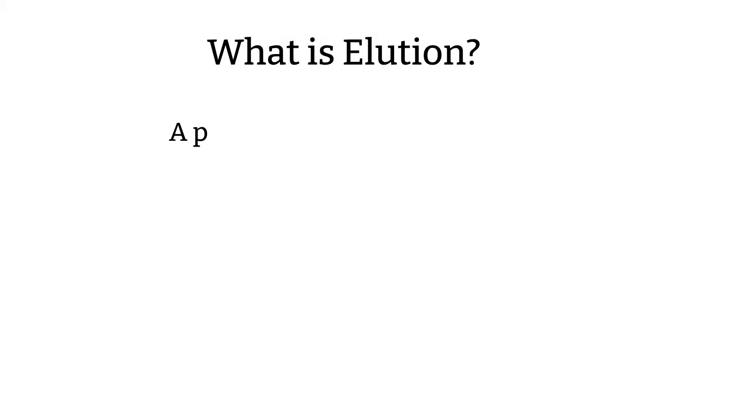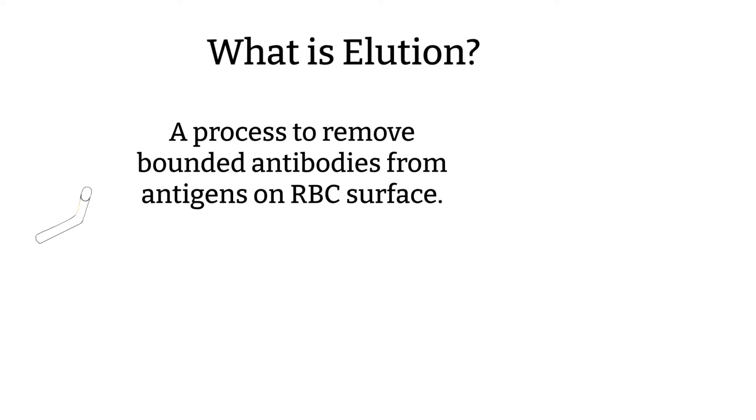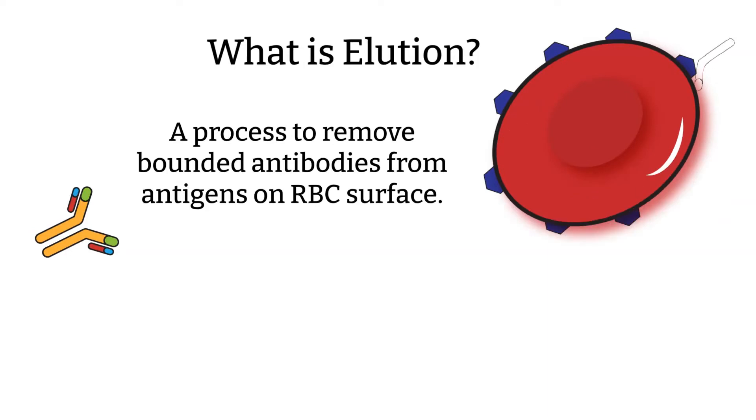What is elution? Elution is the process of removing bound antibodies, usually IgG, from the red blood cell surface. We want to unbind the antibody-antigen bond. We want to disturb that bond. The procedure is called elution.